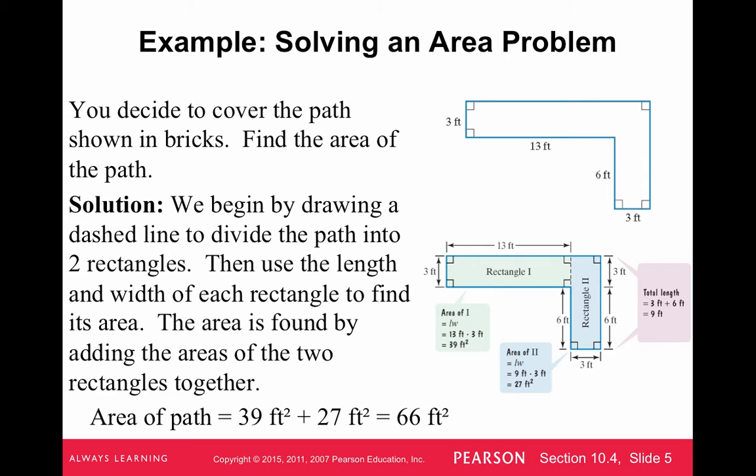So let's say we're going to cover a path, it's an L-shaped path, and we're going to cover it in bricks and we need to know the area of the path. So not all sides are labeled either, but we can evaluate the sides using the information given. For instance, if I wanted to find the perimeter of this figure and I needed to know this really long side, then I would know that it would be this 13 and this 3. So this long side would be 16 feet, and this side would be the 6 plus the 3 feet for 9 feet.